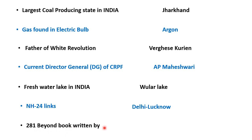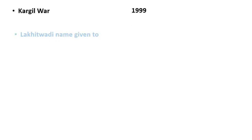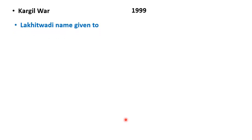281 Beyond book किसने लिखी? इसके दो writers हैं, लेकिन exam में एक ही का नाम आया था। Kargil War 1999 में हुआ था। 'Lekh-ki-vadi' नाम किन्हें दिया गया है? Gopal Hari Deshmukh ji को।